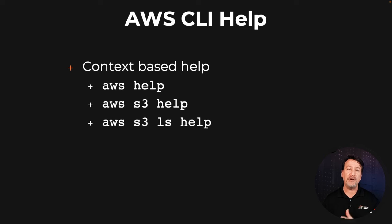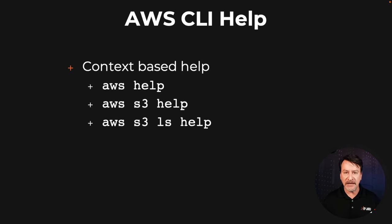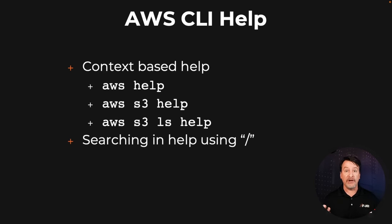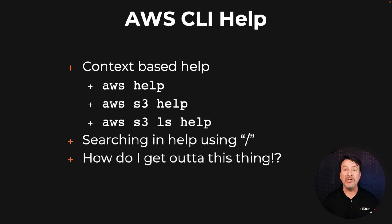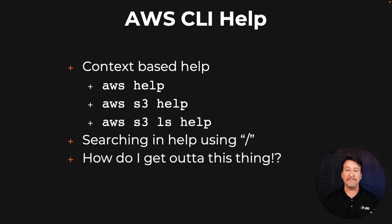Finally, when you're all done, you hit escape, hit the Q key, and that's how you can get out of that thing. You don't have to do a Control-X or a Control-Z to shut the thing down — just escape Q and it drops you out. Let's take a look at how we can use help by jumping into the console.